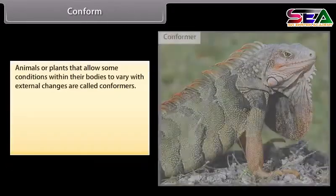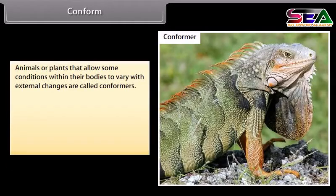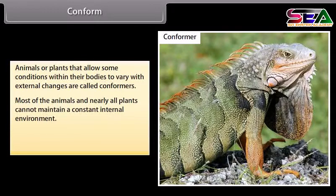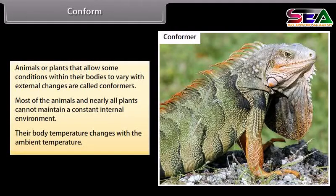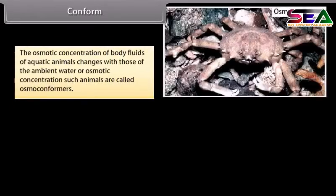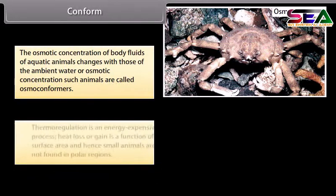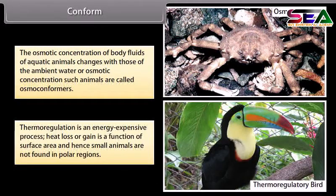Animals or plants that allow some conditions within their bodies to vary with external changes are called conformers. Most animals and nearly all plants cannot maintain a constant internal environment. Their body temperature changes with the ambient temperature. The osmotic concentration of body fluids of aquatic animals changes with that of the ambient water — such animals are called osmoconformers. Thermoregulation is an energy-expensive process, and heat loss or gain is a function of surface area; hence small animals are not found in polar regions.